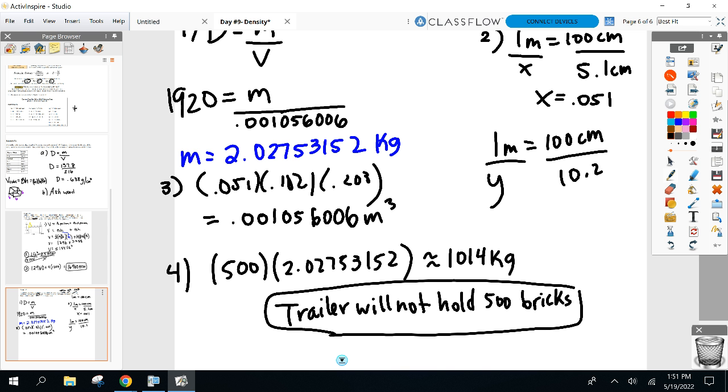Paul asked if I do 0.051 times 0.102 times 0.203 and then multiply that by 500 and then times 1920 to find the mass. Yeah, it's all multiplication, Paul, so the order doesn't matter, remember? Anybody else? All right, let's go. You're not wasting time here. Flip it over.